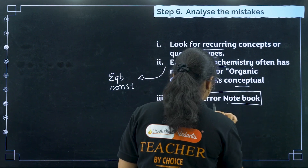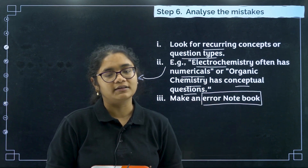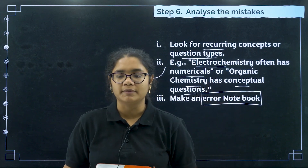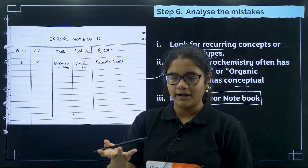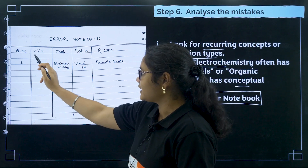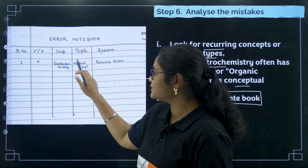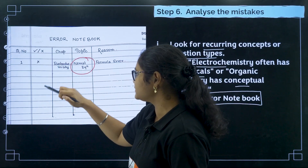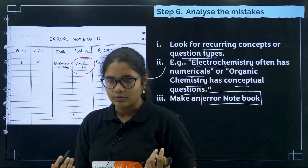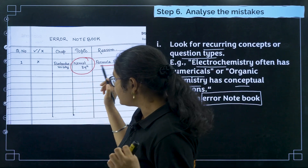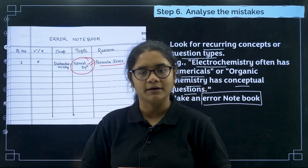The second point in analysis is very important: make an error notebook. Many students do not follow this, which is why they do not improve. Here is how to prepare one: suppose you solved 30 questions from electrochemistry. Write down the question numbers and mark whether each was correct or wrong. For wrong questions, note the chapter name and topic — for example, 'the Nernst equation question was wrong' — and then note the reason: for instance, a formula error. This way you know that Nernst equation is the topic where you are making mistakes, so you can go revise that formula and strengthen that topic.